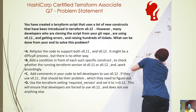You have created a Terraform script that uses a lot of new constructs which have been introduced in Terraform version 0.12. However, many developers who are cloning the script from your git repo are using version 0.11 and getting errors and raising hundreds of tickets. What can be done from your end to solve this problem?